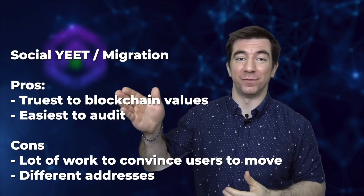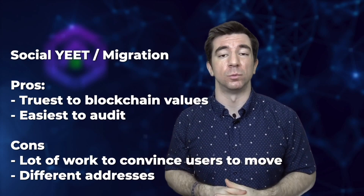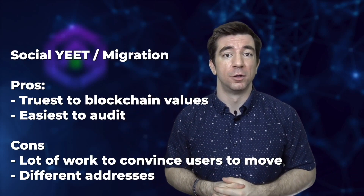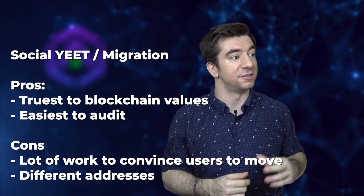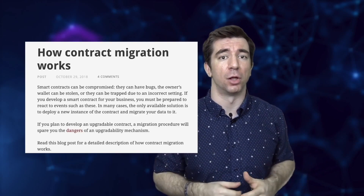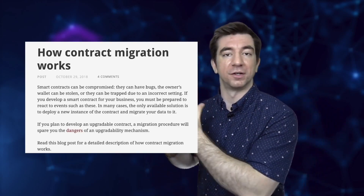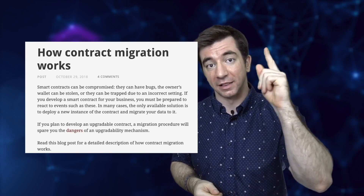A huge disadvantage of social migration is that you need a totally new contract address. If you're an ERC20 token, you have to convince all exchanges to list the new address. You also have to move the state from the first contract to the second — taking all those mappings and migrating them. If you have a million transfer calls, writing a script to update everyone's balance is a massive undertaking. Trail of Bits has written a fantastic blog on upgrading with this methodology.